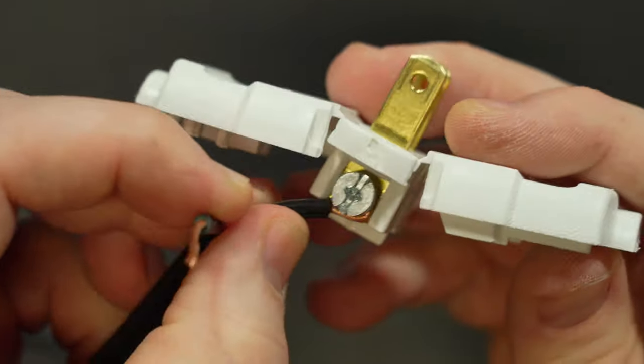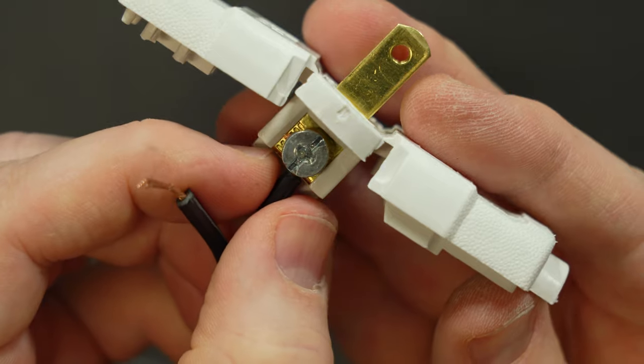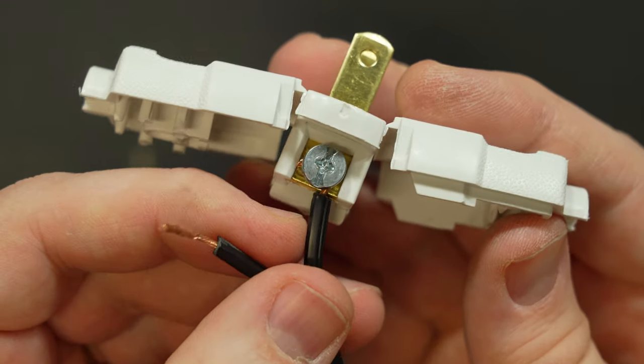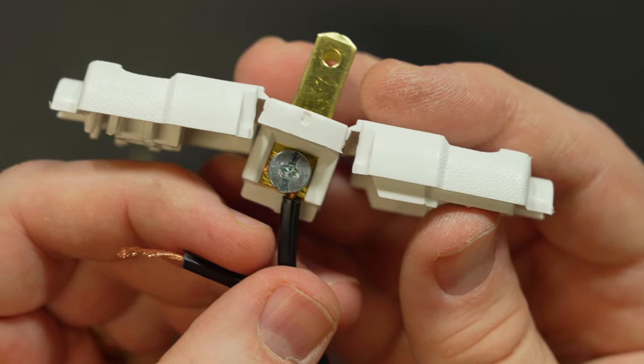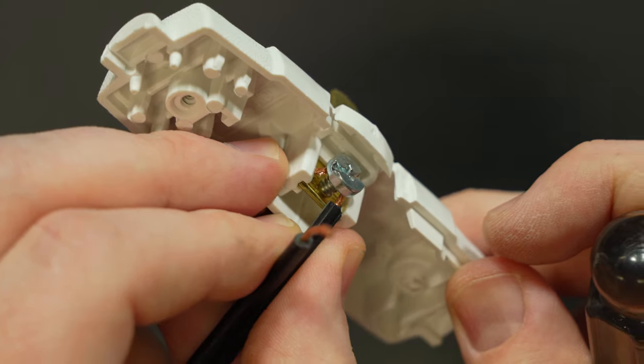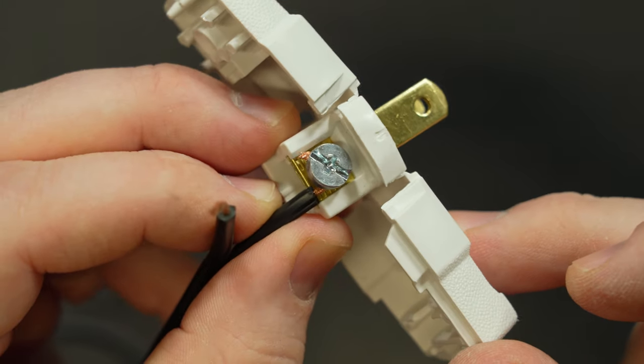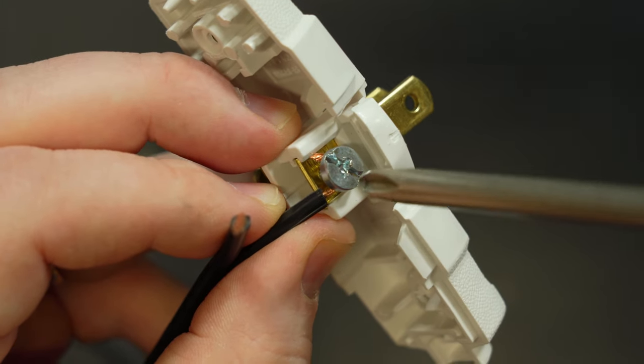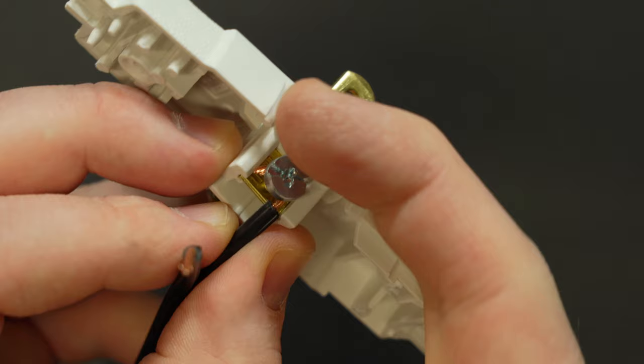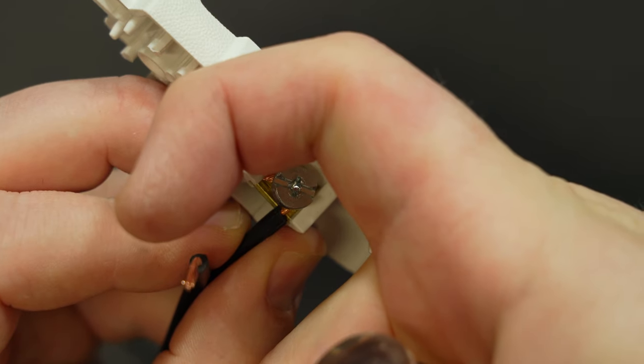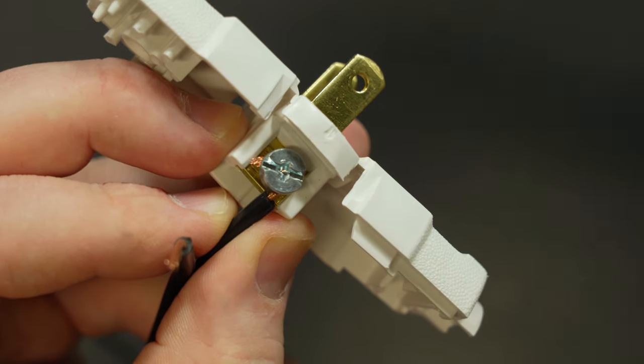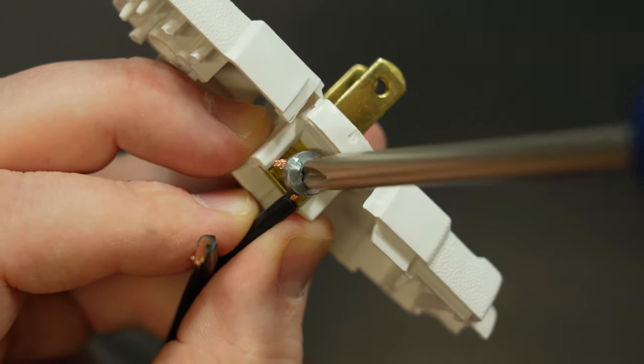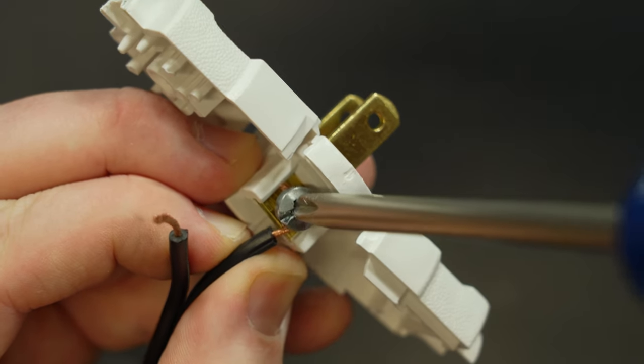Now I've purposely done this incorrectly for this example as I want to demonstrate the most common error that people make when replacing plugs like this. You should wrap the wire around the screw in a clockwise direction but right now in this demonstration I've wrapped it counterclockwise which will have a tendency to unwrap the wire and force the conductor out of the joint as I tighten down the screw.